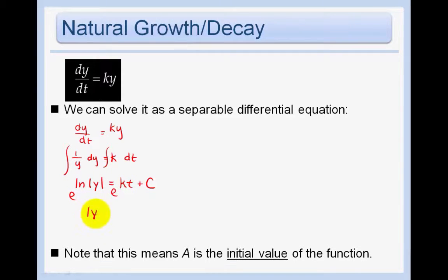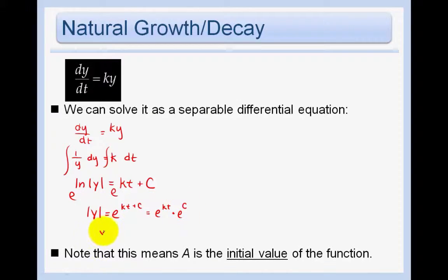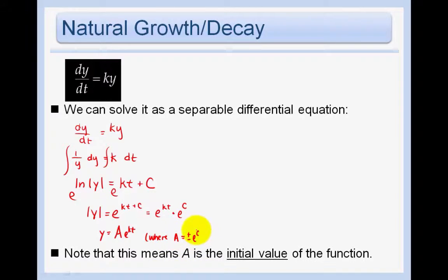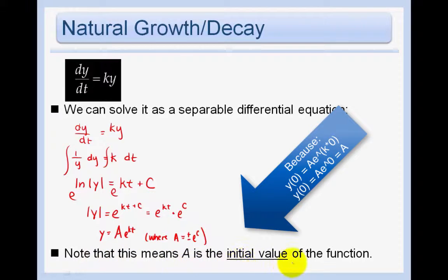We're left with |y| equals e^(kt+c), which is the same as e^(kt) times e^c. So we can say y equals Ae^(kt), where we let A equal plus or minus e^c. Note this means that A is the initial value of the function, or y₀, which we've seen before.